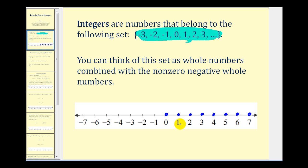So if we include the negative of the non-zero whole numbers, we would include negative one, negative two, negative three, negative four, and so on. And this is the set of integers.